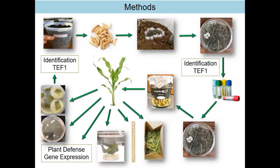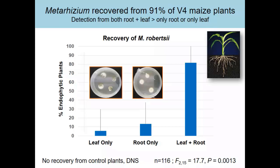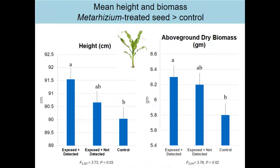When we expose seeds to the fungus and grow plants, we get 91% infected plants — this fungus is happy to grow in corn and corn is happy to host it. Even though we're exposing just the seed, we can look at where in the plant the fungus gets established — just the leaf, just the root, or both. The vast majority of the time, when seeds are exposed, as the plant grows the fungus is throughout the whole plant — somehow growing up through the stem and leaf too.